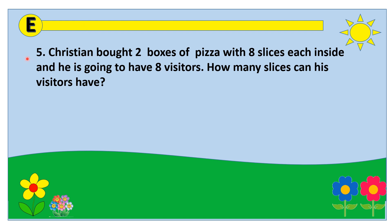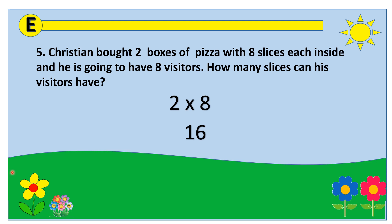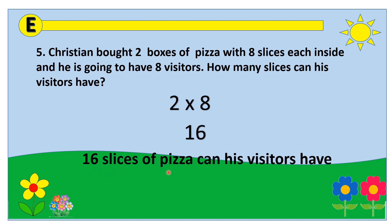Christians bought 2 boxes of pizzas with 8 slices inside, and he is going to have 8 visitors. How many slices can his visitors have? The problem asks about the total number of slices his visitors have. The given facts needed are 2 boxes of pizza and 8 slices inside. We do not need the number of visitors because the problem asks for the total slices, not per person. So we multiply: 2 times 8 equals 16. Therefore, 16 slices of pizza can his visitors have.